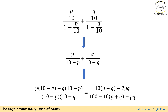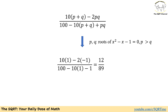Simplifying by removing the 10 from the denominators, we get P/(10 minus P) plus Q/(10 minus Q). Combining further, this becomes (10 times (P plus Q) minus 2PQ) over (100 minus 10 times (P plus Q) plus PQ). Since P and Q are roots of the quadratic, by Vieta's formulas: P plus Q equals 1 and PQ equals negative 1. The numerator becomes 10 times 1 minus 2 times (minus 1) equals 12, and the denominator becomes 100 minus 10 times 1 minus 1 equals 89. So the answer is 12 over 89.